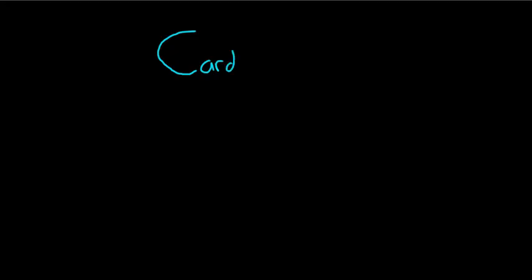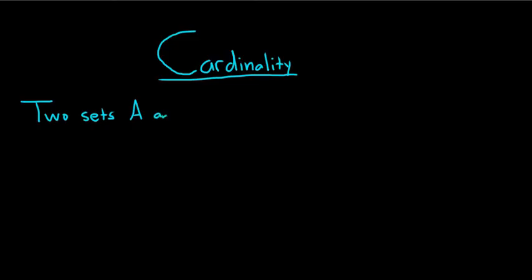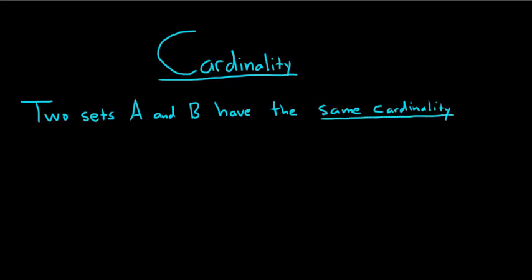In this video, we're going to talk about cardinality. Two sets A and B have the same cardinality if they have the same number of elements. Cardinality is used to represent the number of elements in the set, so the cardinality of a set tells you how many elements you have in your set.